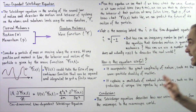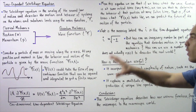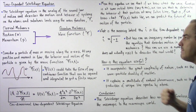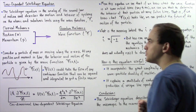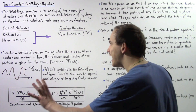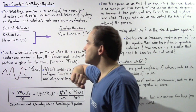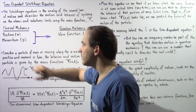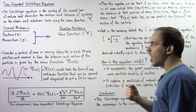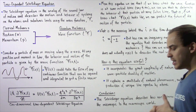So in quantum mechanics, the wave function describes the motion and behavior of our object in a similar way — in an analogous way — that position and momentum describe the motion of that object in classical mechanics.